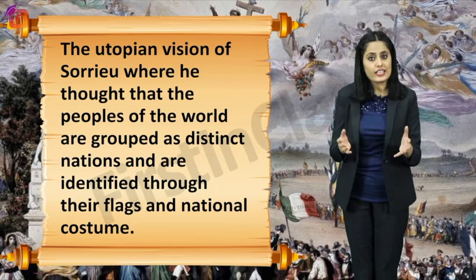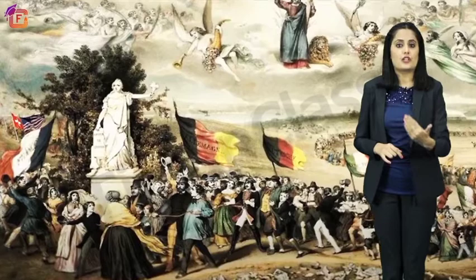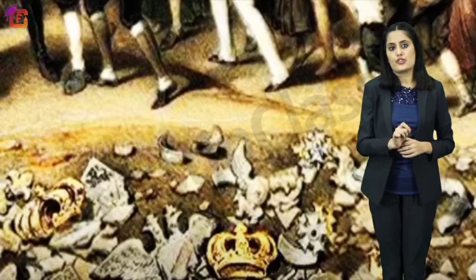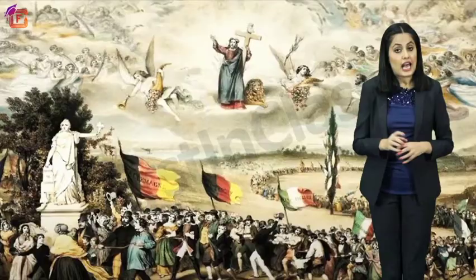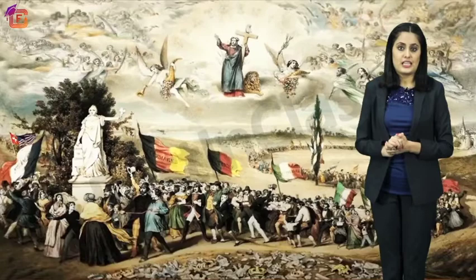To summarize, Frederick Sorrio prepared a series of four prints visualizing his dream of a world made up of democratic and social republics. The image showed a trail of men and women paying homage to the Statue of Liberty, the shattered remains of absolutist institutions on the ground, and gods looking upon the scene from the sky. The people carrying flags and wearing national dress reflected Sorrio's utopian vision that nations are identified by their flags and costumes.